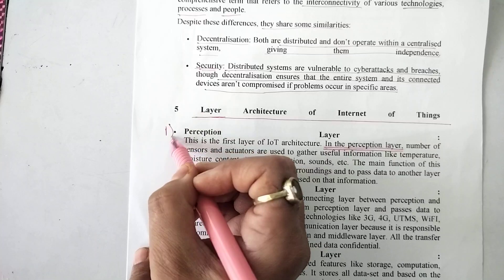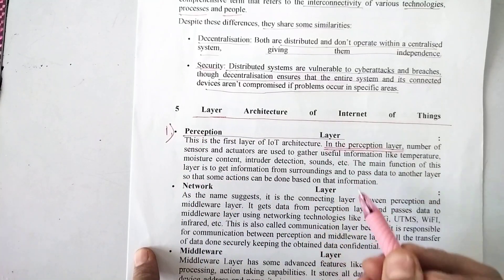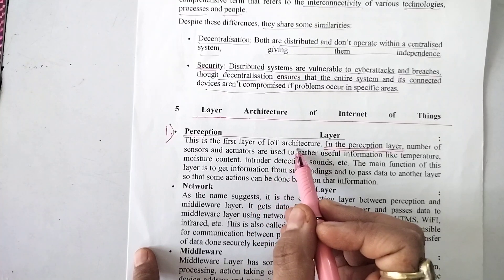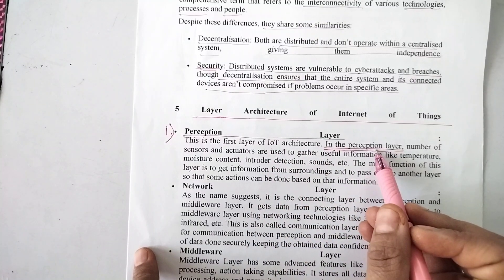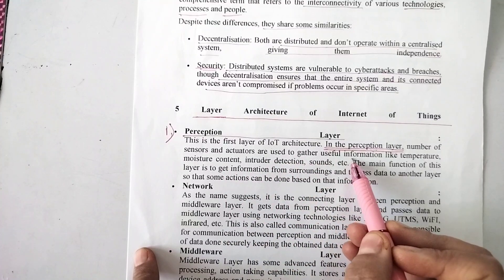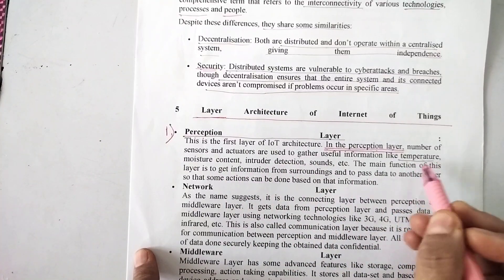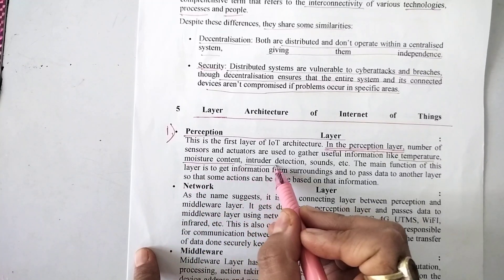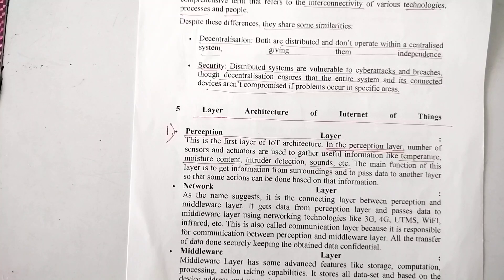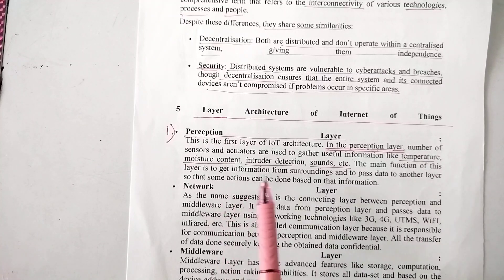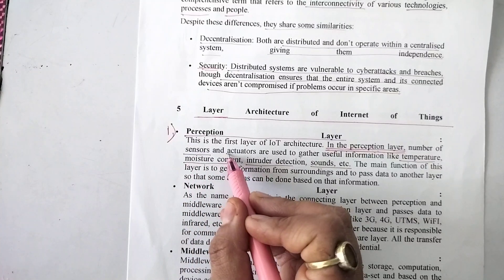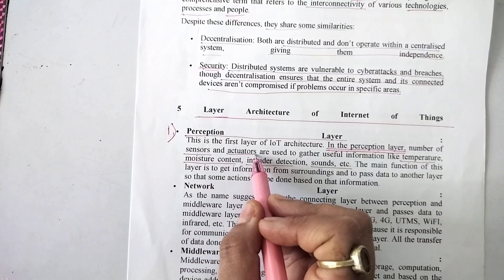Starting with the first layer, the perception layer. This is the first layer of the IoT architecture. In the perception layer, sensors and actuators are used to gather useful information like temperature, moisture content, intruder detection, sounds, etcetera. Basically, the perception layer uses sensors and actuators. Sensors capture the data and actuators process that captured data.